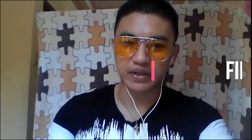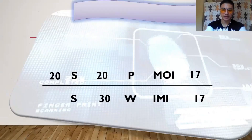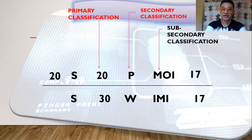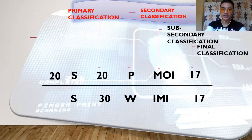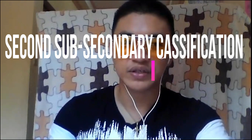The next topic is fingerprint classification. The first classification to be resolved is the primary classification, followed by the secondary classification, then the sub-secondary classification, the final classification, the major classification, and lastly the key classification — a six-division system. Additionally, it may become seven divisions upon the addition of the second sub-secondary classification, which is placed on top of the sub-secondary classification.